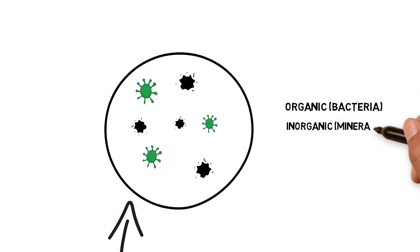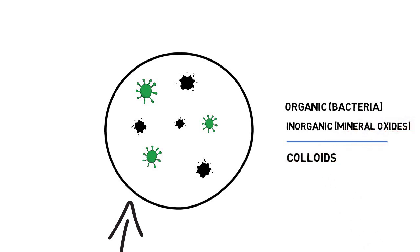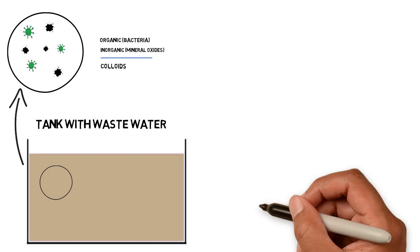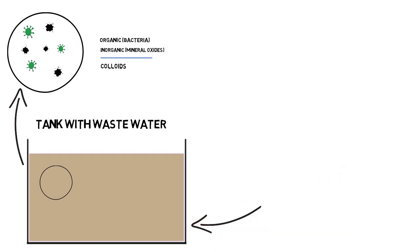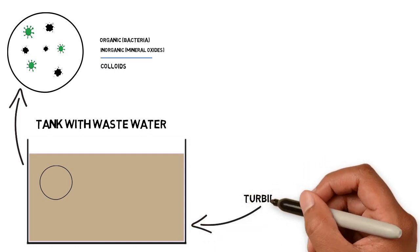The sum of organic and inorganic particles that stay suspended in the waste water are called colloids. The brownish cloudiness in the waste water is called turbidity.